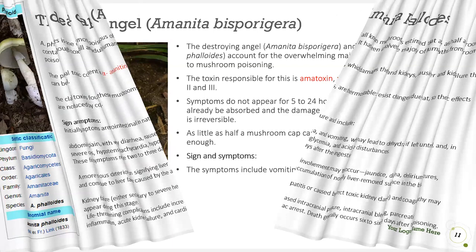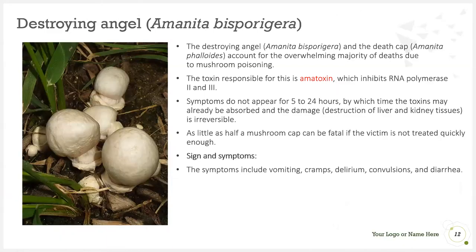The destroying angels and the death cap account for the overwhelming majority of deaths due to mushroom poisoning. The toxin responsible is amatoxin, which inhibits RNA polymerase II and III. Symptoms do not appear for 5 to 24 hours, by which time the toxin may already be absorbed and the destruction to liver and kidney tissues will have become irreversible. As little as half a mushroom cap can be fatal. Signs and symptoms include vomiting, cramps, delirium, convulsions, and diarrhea.